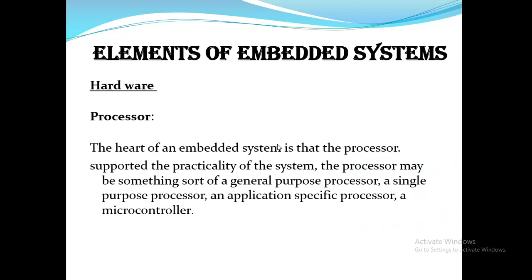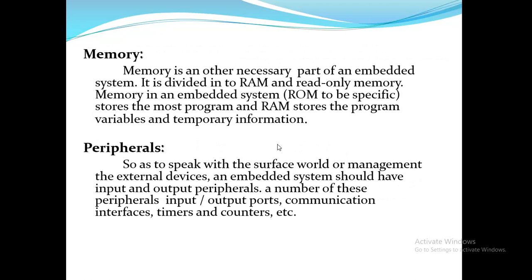The elements of an embedded system include hardware and software. The processor processes input data and provides output. Memory stores and manages data — it is divided into RAM (Random Access Memory) and ROM (Read Only Memory). From ROM you can only read data, while RAM provides random access.